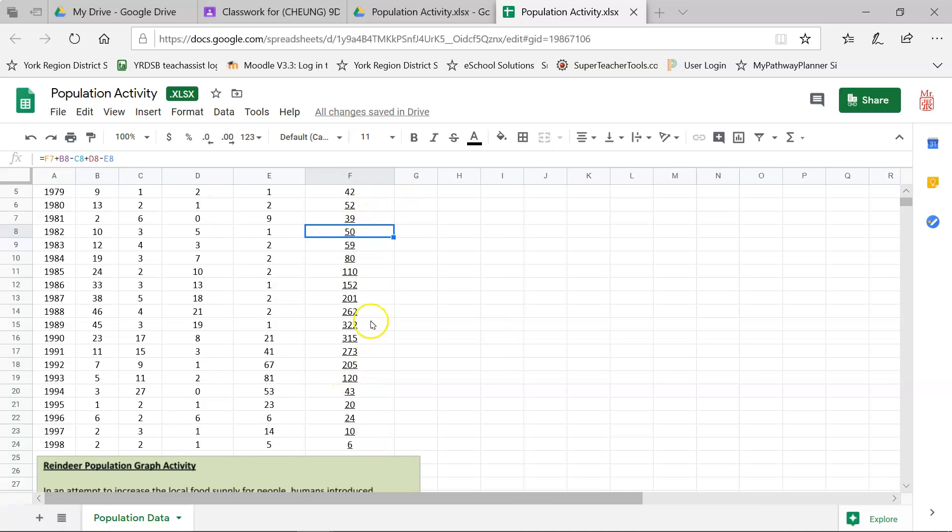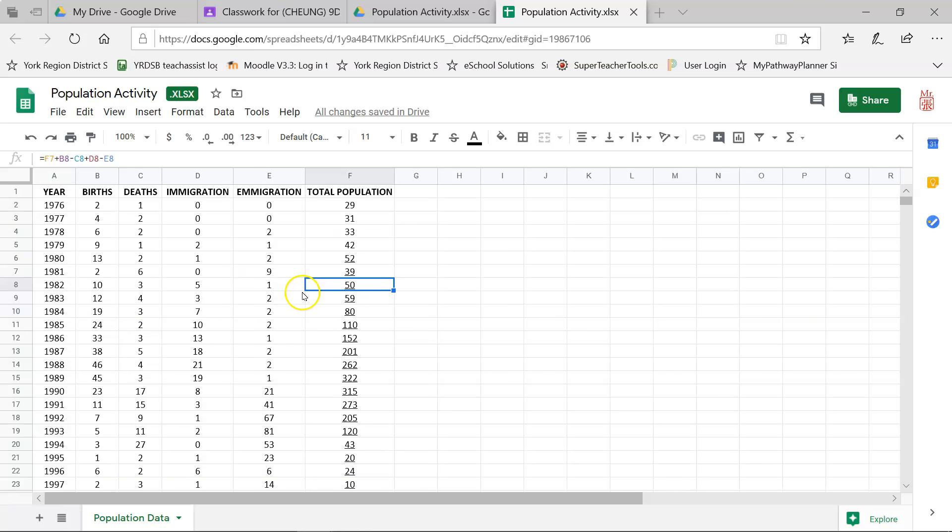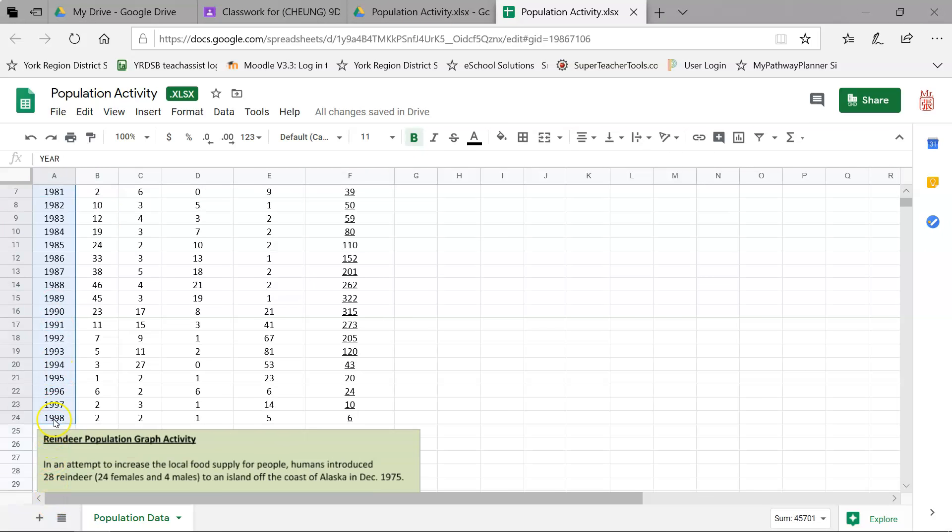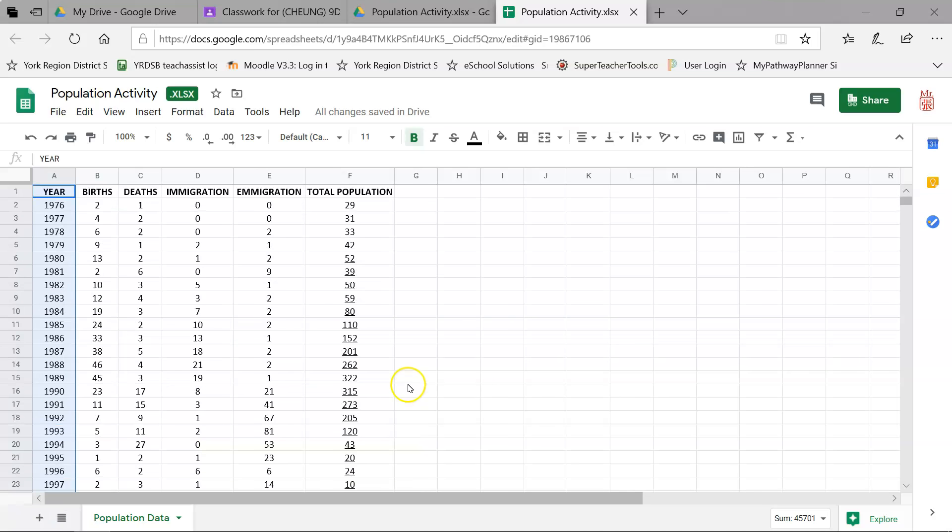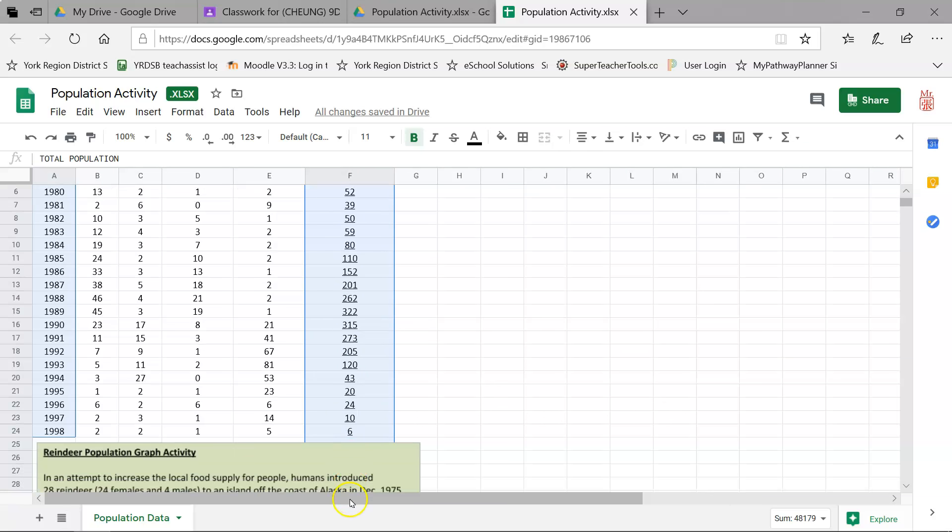I typically use this feature whenever I'm doing some mindless calculations that can be repeated over and over and over again. The next thing we're going to do now is we want to create a graph. So what I want you to do is highlight this entire column. Year. All the way to the bottom here. 1998. Scroll to the top. Hold the control key on your keyboard. So on the keyboard there should be a control button. Hold down on it. And then highlight this section as well. That way I can select two columns all at once. Okay. To the end. And then let go.